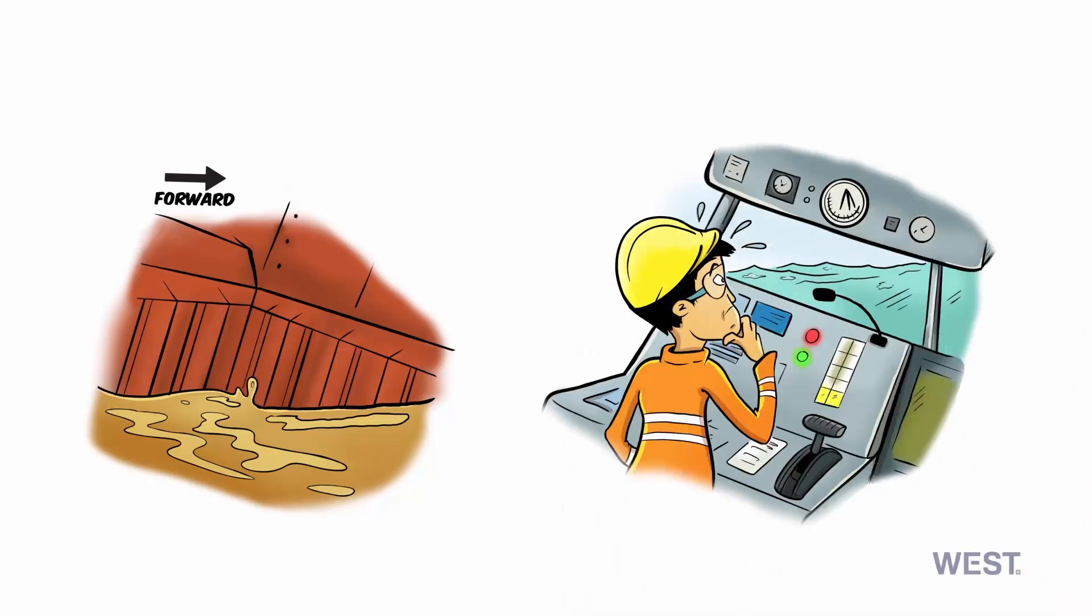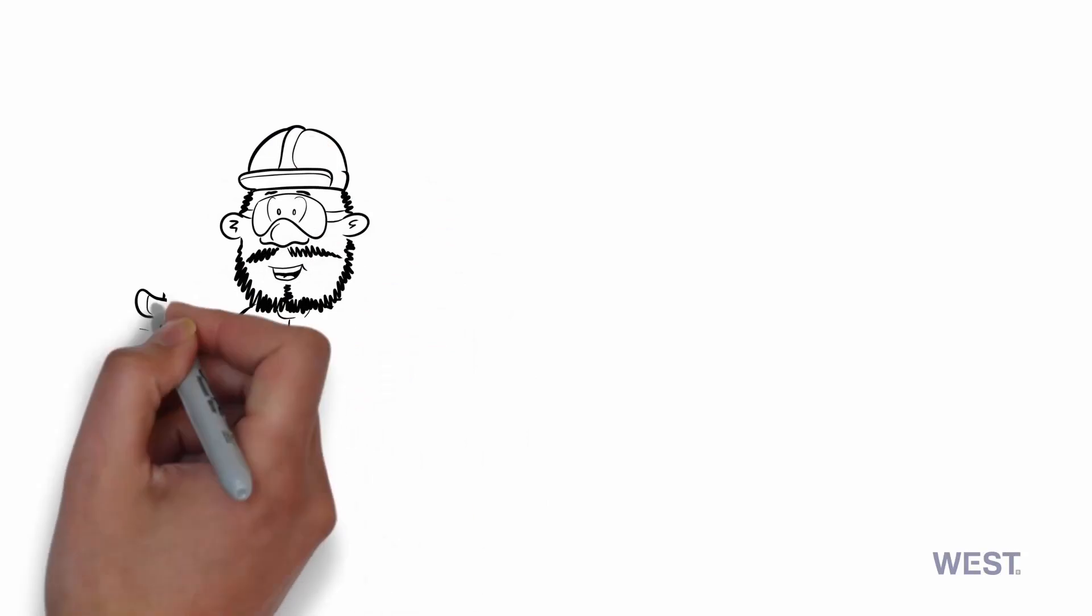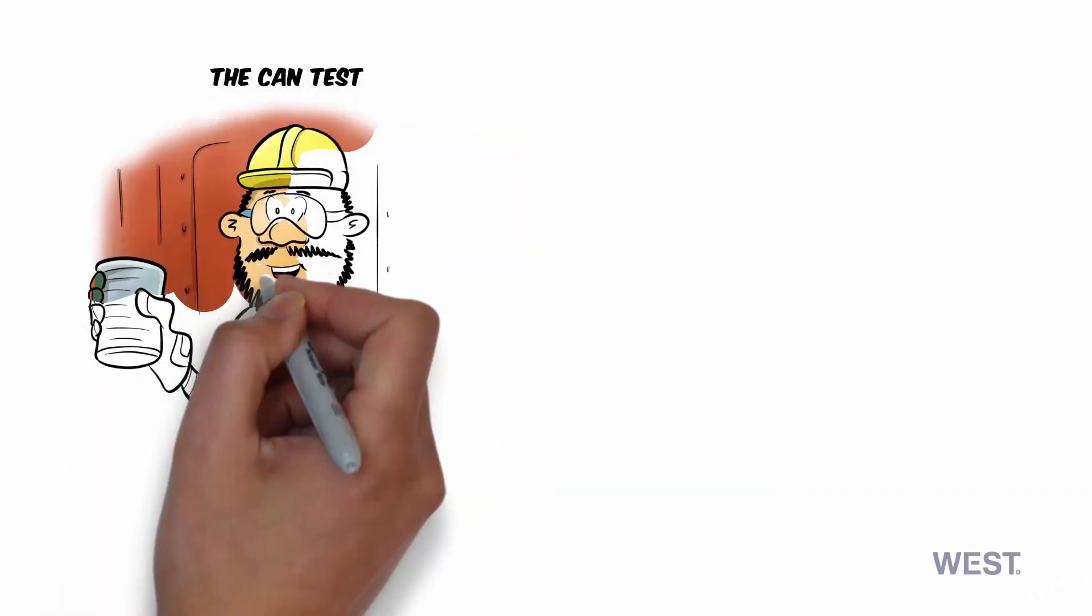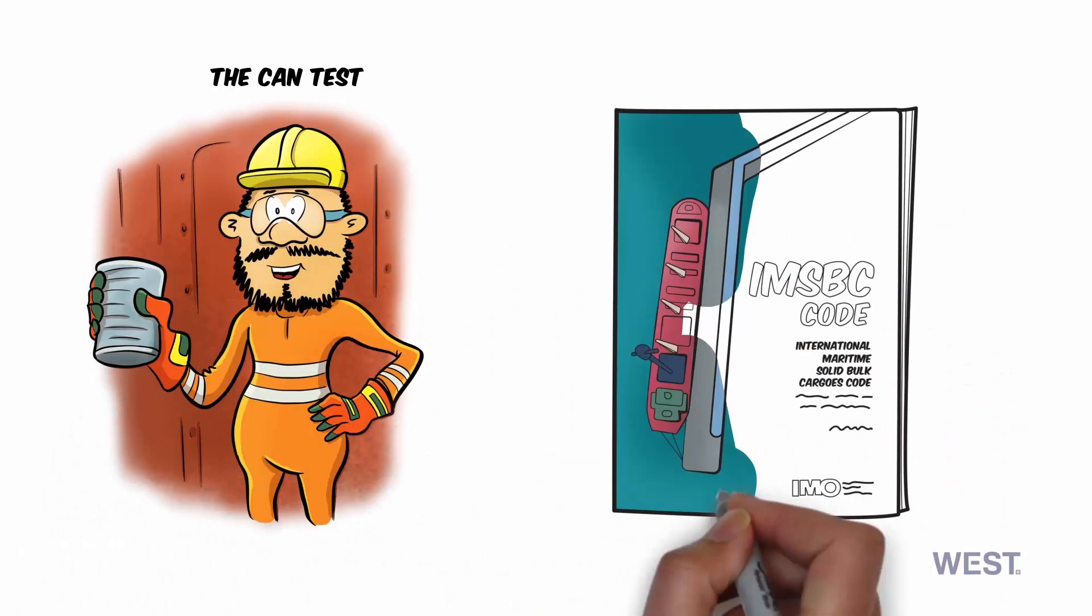So how do we identify potentially dangerous cargo? A simple test that can be carried out to determine if a cargo may be unsafe is the can test, which is explained in the IMSBC code.